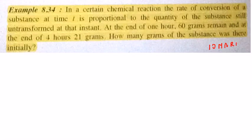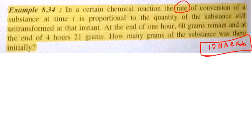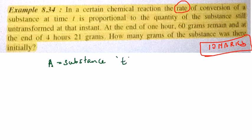Example 8.34 is a very important 10-mark question, so let us pay attention. In a certain chemical reaction, the rate of conversion of a substance at any time t is proportional to the quantity of the substance which is still not transformed at that instant. There is a substance A which represents the amount still not transformed at any given time t.